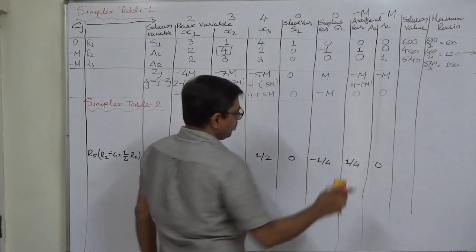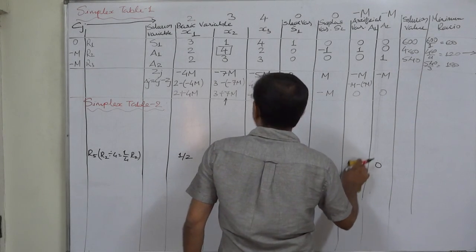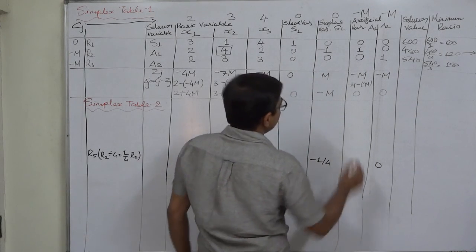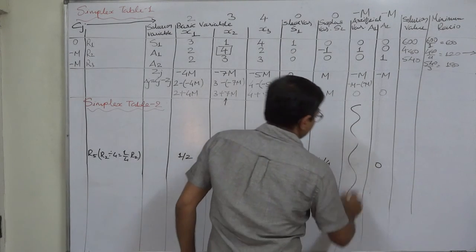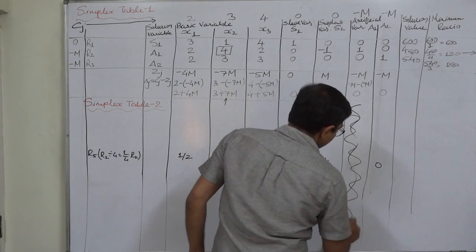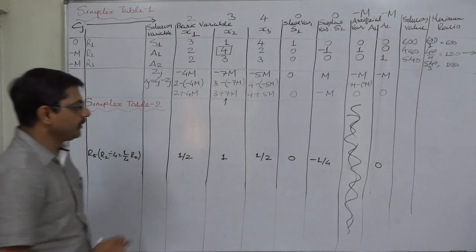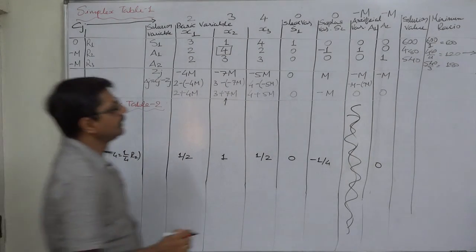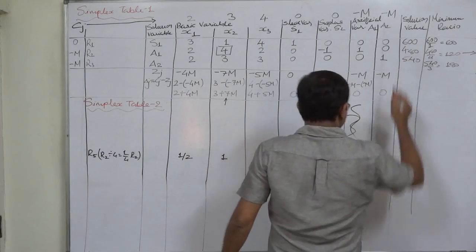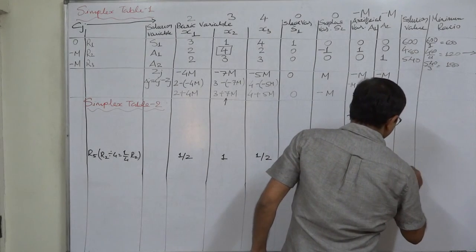We are not going to prepare the column of a1 because a1 is the outgoing variable. So drop the column of the outgoing variable. 480 divided by 4 will be 120.